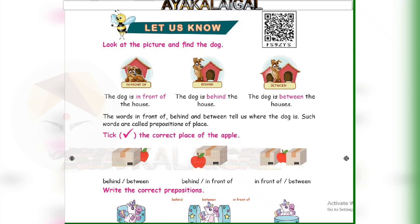In prepositions, we have three words: in front of, behind, and between. The words 'in front of,' 'behind,' and 'between' tell us where the dog is. Such words are called prepositions of place.